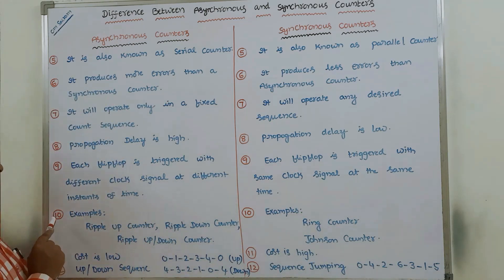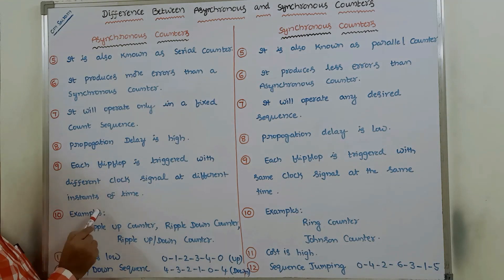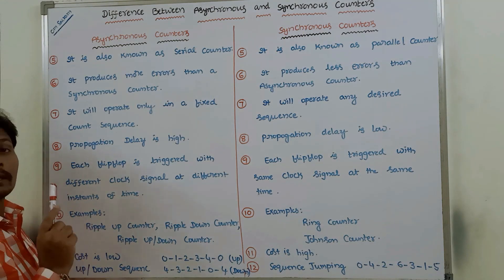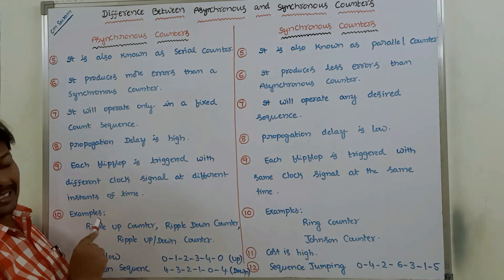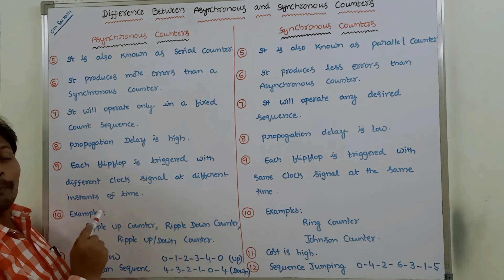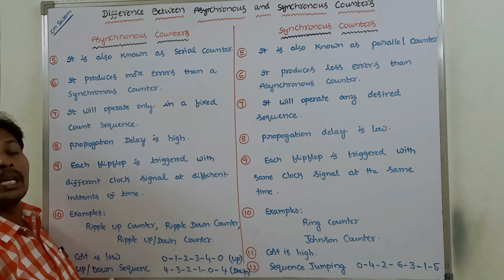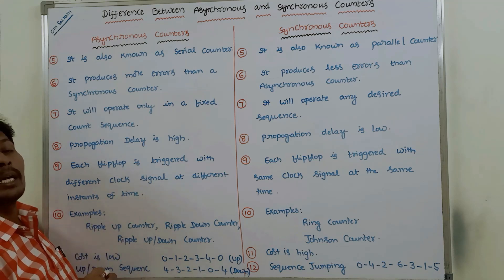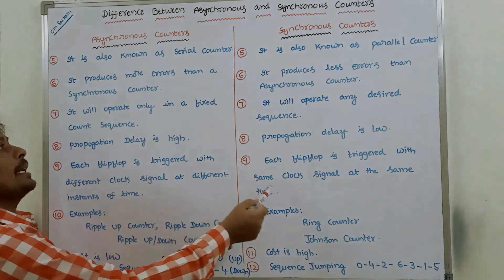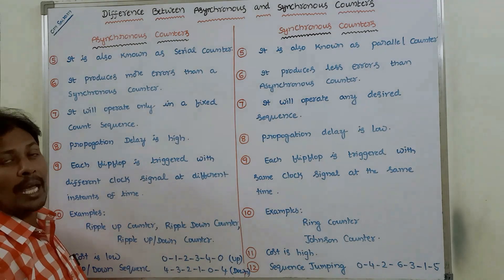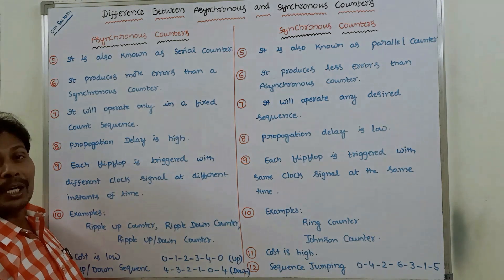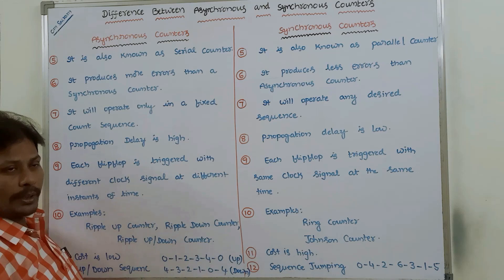Tenth point: examples for asynchronous counters are ripple up counter, ripple down counter, and ripple up-down counters. Examples for synchronous counters are ring counter and Johnson counter.